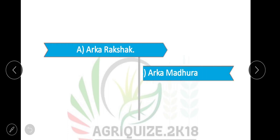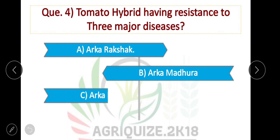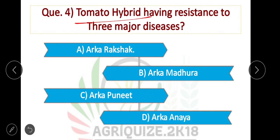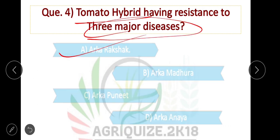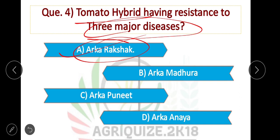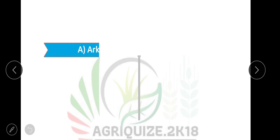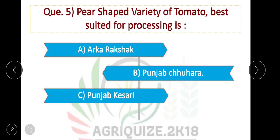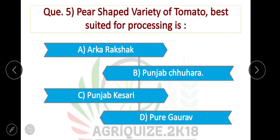Question number 4: Which tomato hybrid has resistance to three major diseases? The correct answer is that the hybrid having resistance to three major diseases is the correct option. Question number 5: The pear-shaped variety of tomato best suited for processing — the answer is Pusa Chuhara, which is a pear-shaped variety of tomato best suited for processing.